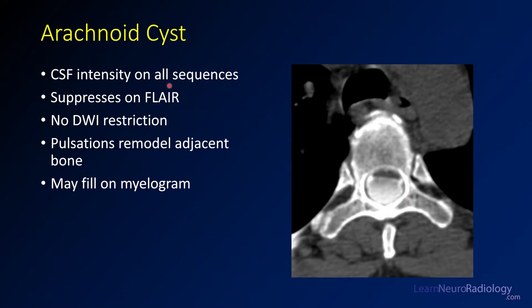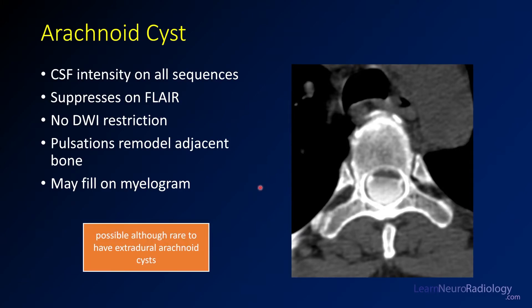This is what an arachnoid cyst looks like on a myelogram — you see shading of the contrast. Arachnoid cysts tend to follow CSF on all sequences: T2, T1, and post-contrast. They suppress on FLAIR due to normal fluid suppression, and do not have diffusion restriction. You can sometimes see remodeling of adjacent bone, such as scalloping, usually from chronic pulsation of the CSF causing smooth erosion. You should not see bone destruction. On myelograms, they can fill but often fill slower than normal CSF, which may help delineate their margins. Very thin-sliced T2 imaging like FIESTA or CISS is another useful tool. Arachnoid cysts can occasionally occur in the extradural/epidural space, though this is somewhat rare.